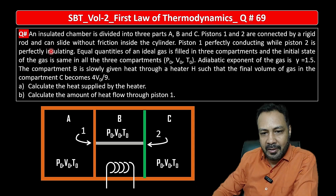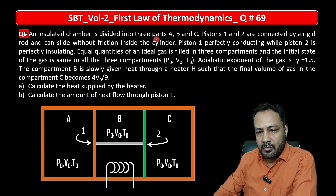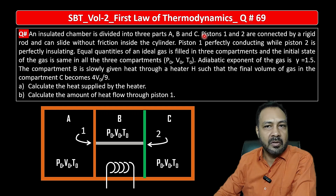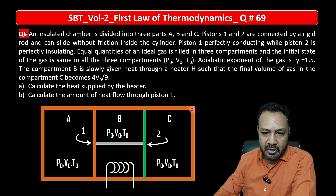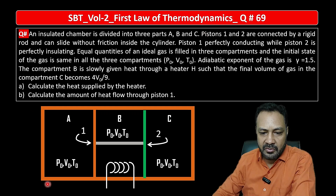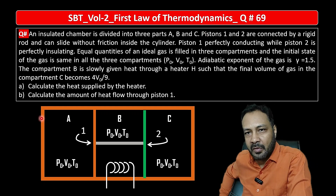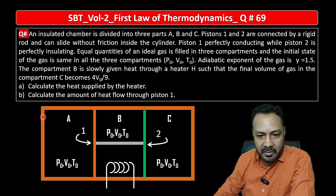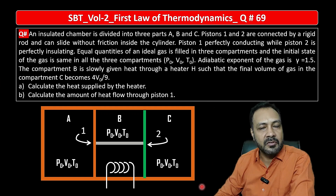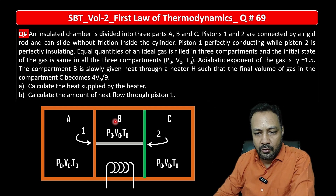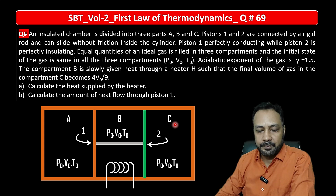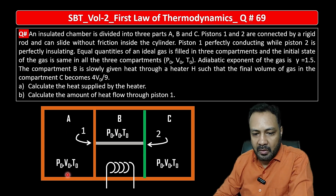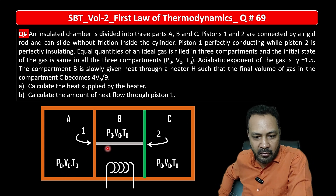In this question, it is said that an insulated chamber is divided into three parts A, B, and C. The boundary is insulating, meaning no heat can enter and no heat can leave — this is a rigid insulated system. It is divided into three parts A, B, and C. The initial volume of these three parts is the same: V₀.